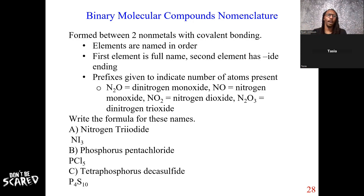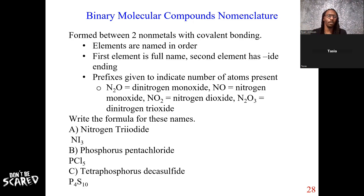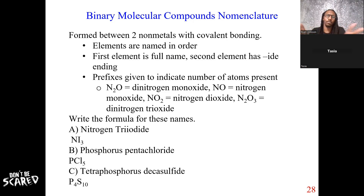I feel like molecular compounds are a little bit easier than ionic compounds, because with ionic compounds you have to balance out the charges overall. But with molecular compounds, there is no balancing — all you're doing is saying how many atoms you have. Any questions? No, like you said, this one was easier than the previous one.